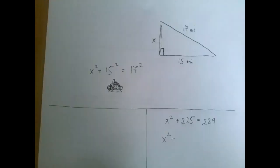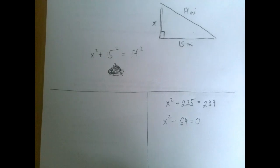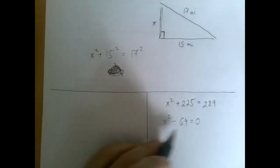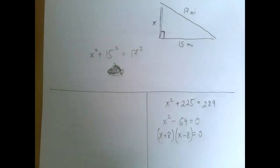So we have x squared minus, and when we subtract 289 minus 225, we get 64. Now we're going to factor. We do not need to complete the square, and we are ready for the difference of squares theorem. This is x squared minus 8 squared, so it will factor into a pair of conjugates as x plus 8 times x minus 8.